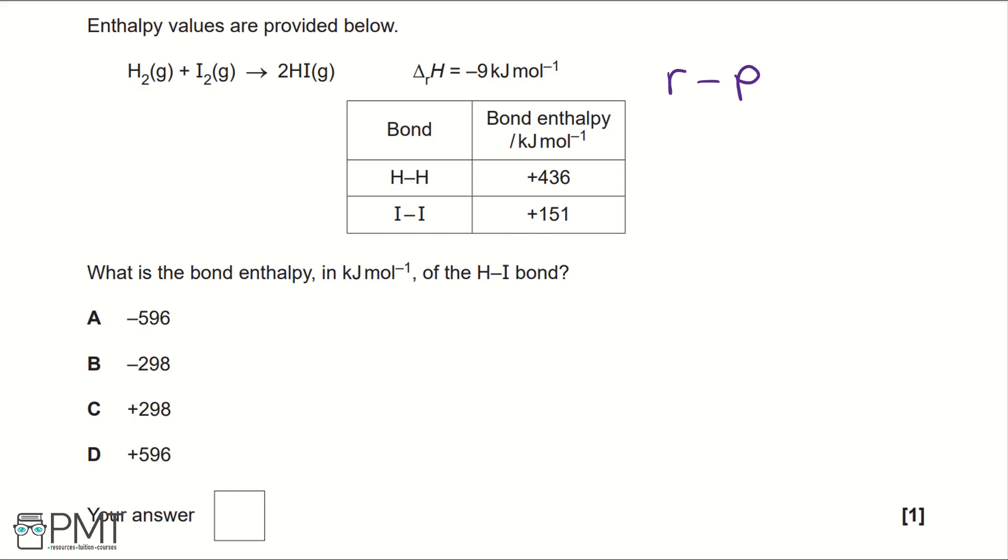So that would be 436 plus 151 minus 2x, and that gives us minus 9. The 2x, or the x, is the H-I bond, and there are two of them because of the 2 in the equation.